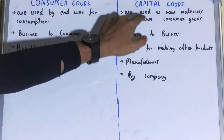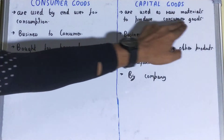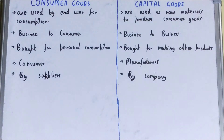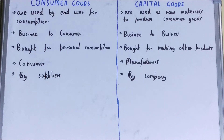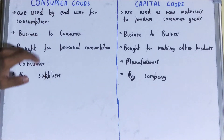But if we talk about capital goods, these are the goods that are used as raw materials to produce consumer goods. So your capital goods are used for the manufacture of consumer goods.